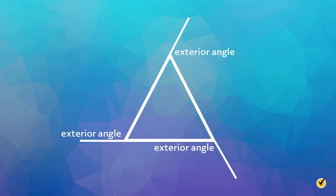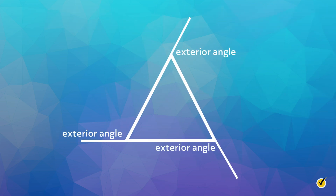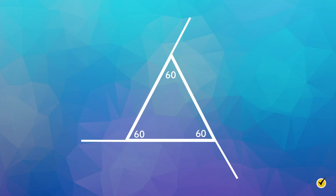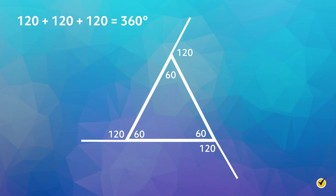Now let's talk about exterior angles. When we extend the sides of a polygon, the angle created on the outside is called an exterior angle. As you can see, the exterior angle and the interior angle form a straight angle. Now we will consider a regular triangle — the measure of each interior angle is 60 degrees. If the interior angle is 60 degrees, then the exterior angle must be 120 degrees. We can add the measure of the three exterior angles to find the sum of the exterior angles of a triangle, which is 360 degrees.